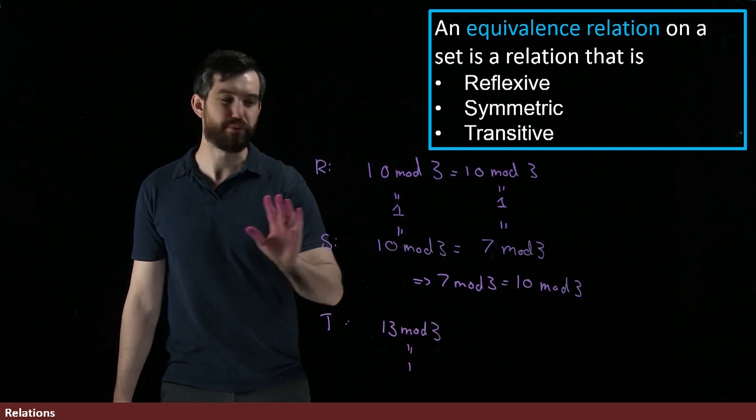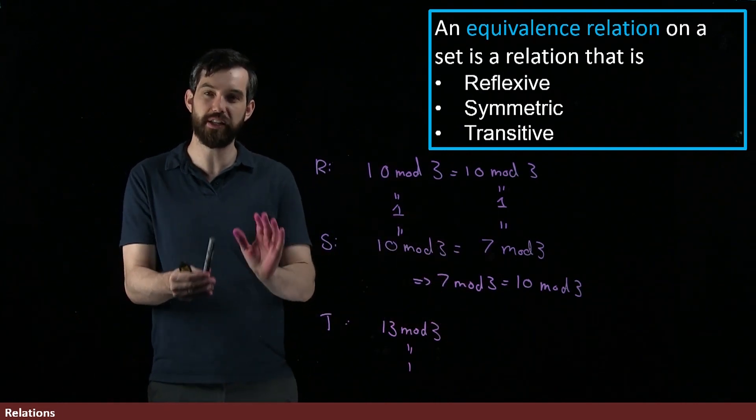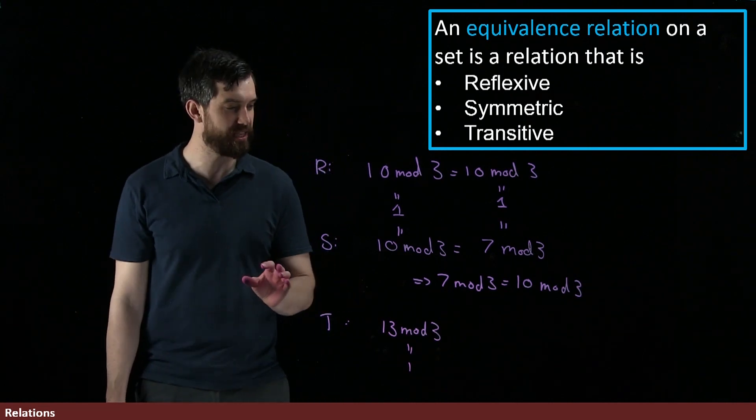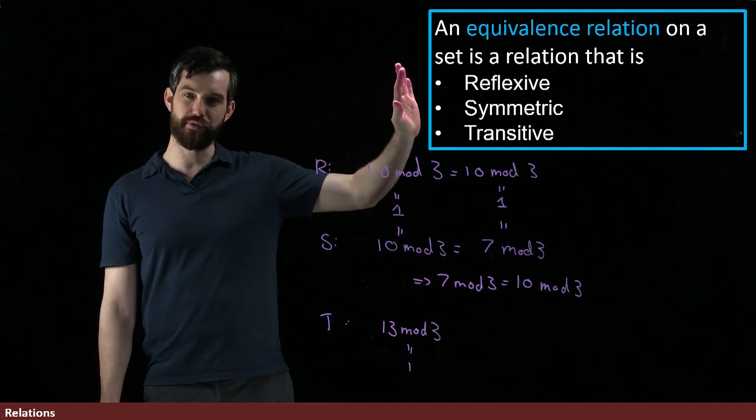Now, I haven't really formally proven it. I just did a quick example with some numbers, but I think it's enough to illustrate the idea that normal equality of numbers and this modular arithmetic are two examples of equivalence relations.